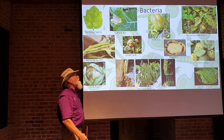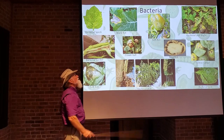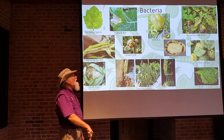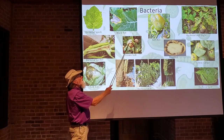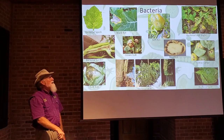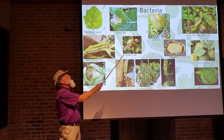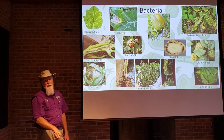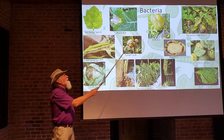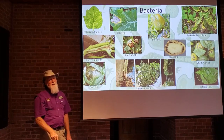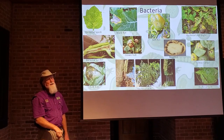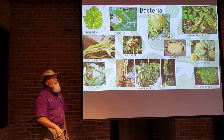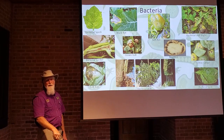Crown gall, caused by Agrobacterium tumefaciens — this is crown gall on a rose. Crown gall infects many different plants forming tumorous, warty-looking galls. Interestingly, the bacterium infects the plant and, using plasmids I mentioned earlier, actually transfers some of its DNA to the genome of its host. That's what causes the host to make all these galls — the bacterium gives the host some of its DNA.